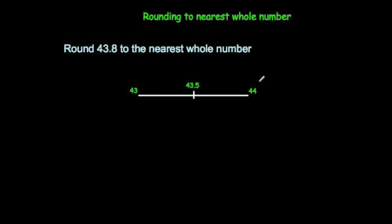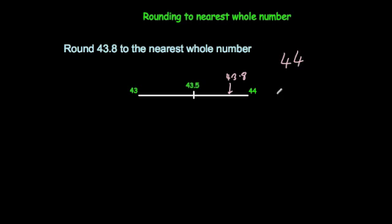This time we've been asked to round 43.8 to the nearest whole number. Again we've got 43 and 44, and 43.8 would be somewhere on the number line around this region. As you can see, it's closer to 44 than it is to 43, so rounded to the nearest whole number the answer would be 44.